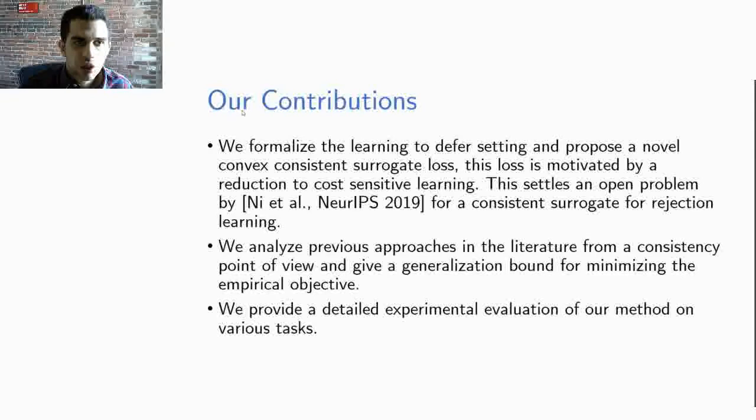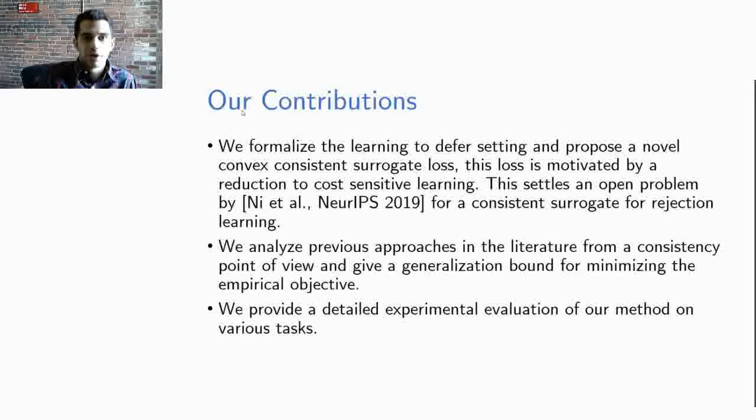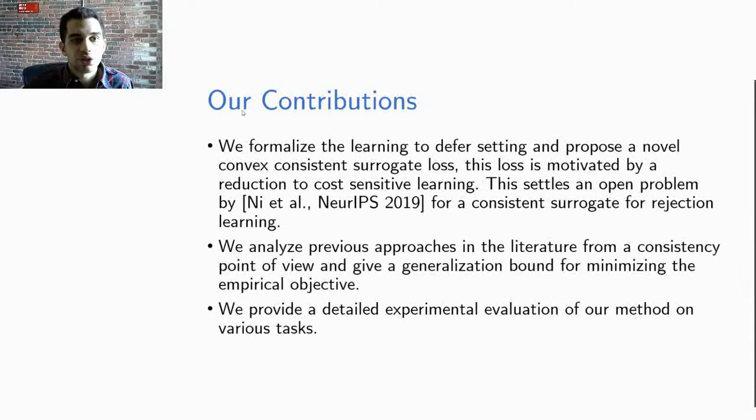In this work, we formalize the learning to defer setting and propose a novel consistent surrogate loss for the combined human and expert system, which is obtained through a reduction to cost-sensitive learning. This loss settles an open problem by Ni et al. for finding a consistent surrogate for multi-class rejection learning. We analyze previous approaches in the literature from a consistency point of view and give a generalization bound for minimizing the empirical objective.